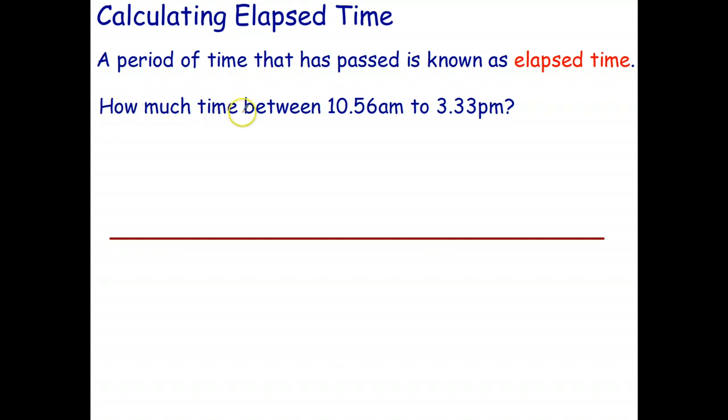So, for example, how much time between 10.56 a.m. and 3.33 p.m.? Now, there's lots of different ways of working this out. I'll show you my preferred method, which is to use what I call a blank number line.